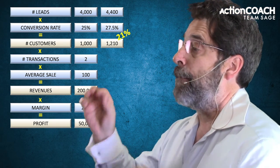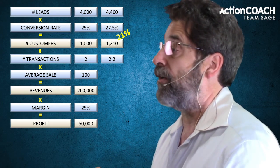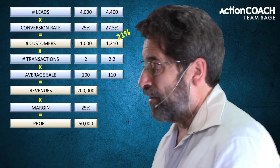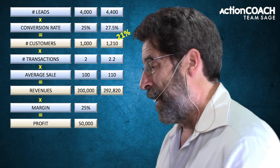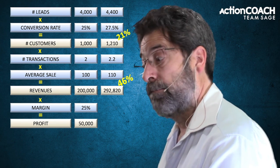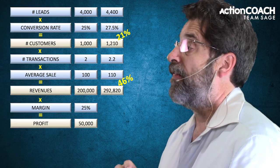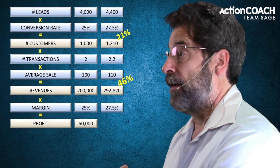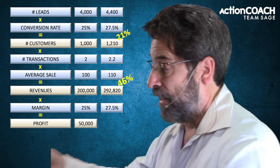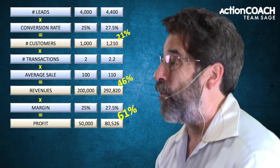If I take my number of transactions of two and increase by 10%, I get 2.2. My average dollar sale of $100 increased by 10% gives me $110. Multiplying those out gives me approximately $293,000 — a 46% increase in revenues. Then taking my 25% margin and increasing by 10% gives me 27.5%. Multiplying $293,000 by 27.5% gives approximately $81,000 in profit. That's a 64% increase.